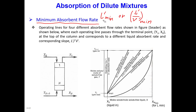The minimum liquid flow rate, or absorbent flow rate, is the minimum slope of the operating line that we can have — which is this line here. Minimum liquid flow rate, or minimum slope, is when the operating line has an intersection with the equilibrium line. That means the two points y_(n+1) and x_n are in equilibrium.